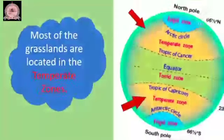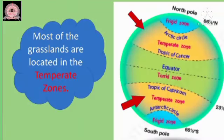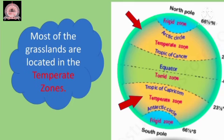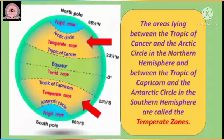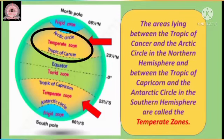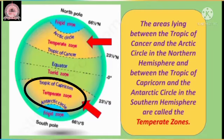Now children, most of the grasslands are located in the temperate zones. The areas lying between the Tropic of Cancer and the Arctic Circle in the Northern Hemisphere, and between the Tropic of Capricorn and the Antarctic Circle in the Southern Hemisphere.